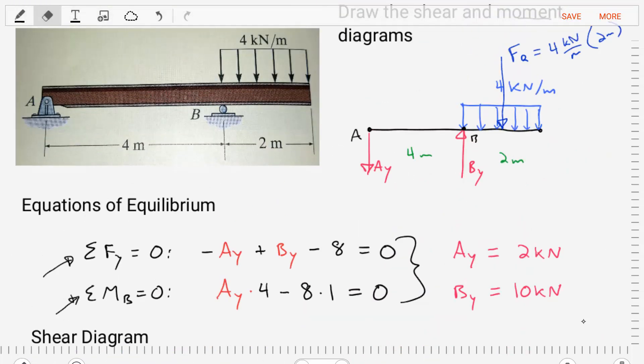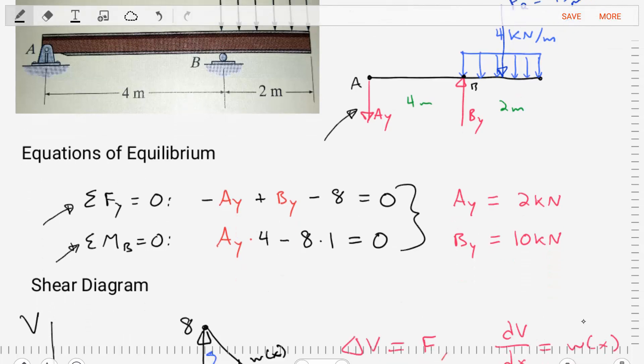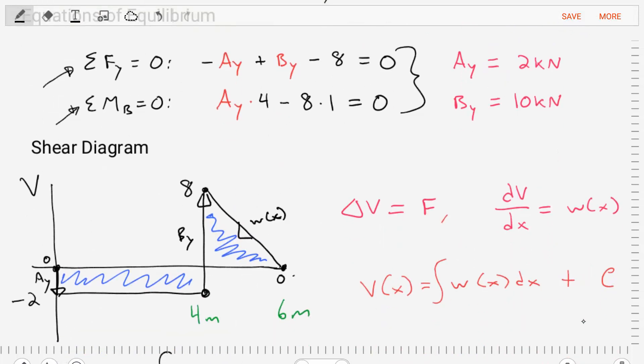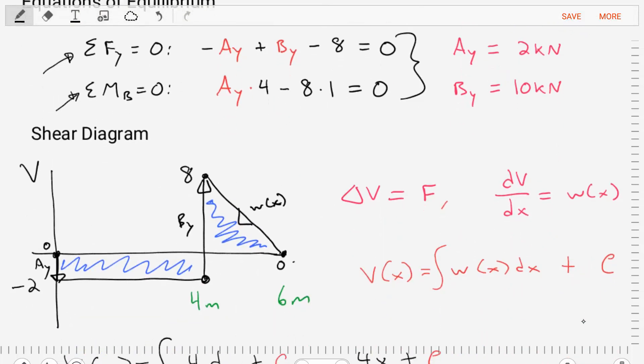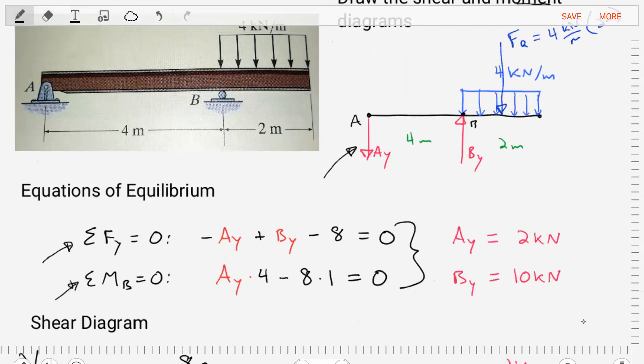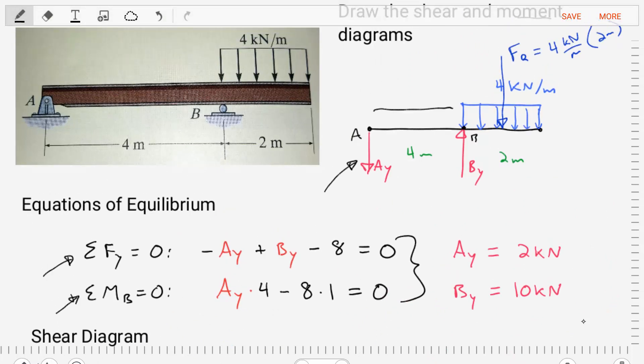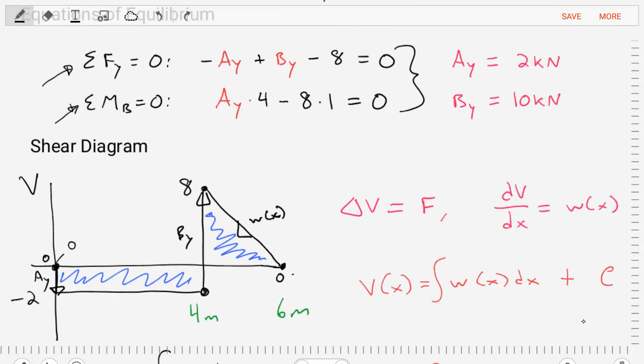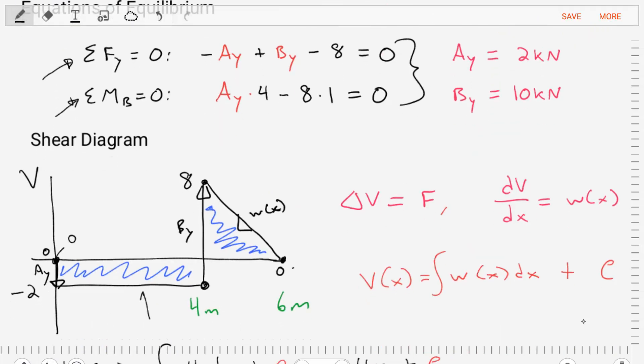If we start at our free body diagram at point A, the first thing we encounter is a load of AY, a value going downwards by 2 kN. So we start at 0, and we step change down by 2 kN. If we go back to our free body diagram, between 0 and 4 meters, nothing happens. So we'll stay at a constant value of negative 2 over that full range.